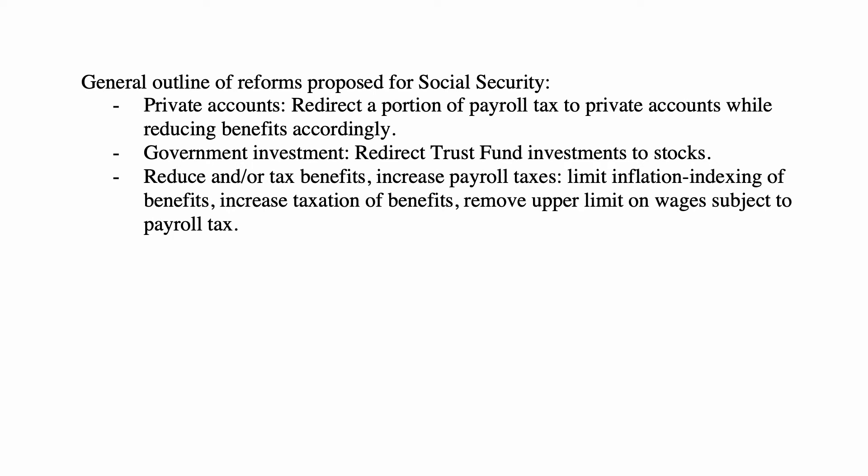The first major talk of Social Security reform was around 1979 when the disability portion nearly ran out of money. A special Greenspan Commission was formed — the same Alan Greenspan who later became Federal Reserve chairman. In the 1990s, reforms were proposed: one was to create private accounts by redirecting a portion of payroll tax while reducing benefits. Currently, both employee and employer pay into Social Security, and benefits are based on a wage history formula.